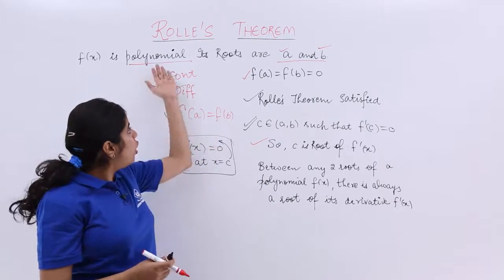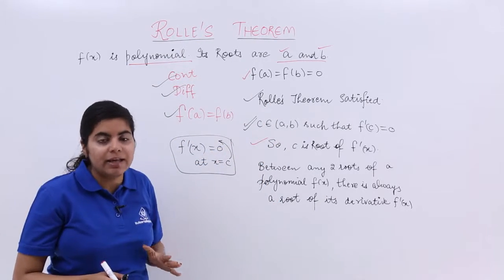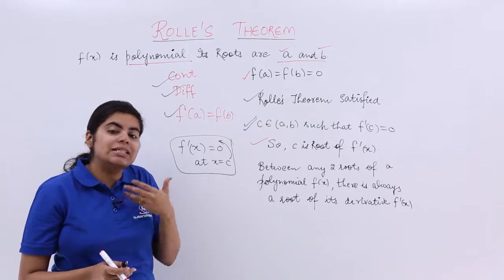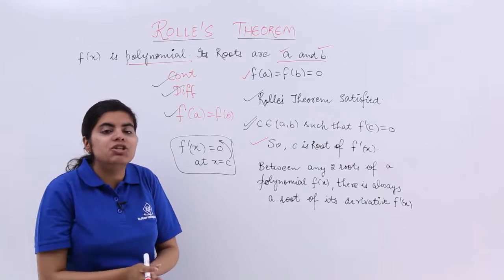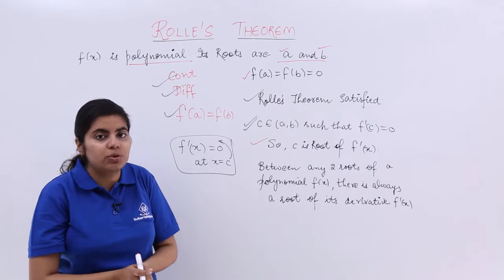Now after all this that we have done and understood, what else can we interpret? So the algebraic interpretation would be like, the algebraic interpretation of Rolle's theorem...